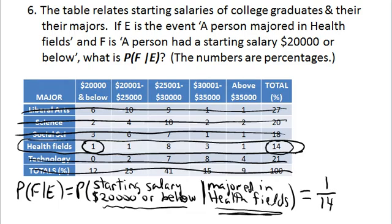So it would be 1/14. This particular problem asks us to write that back as a decimal to the nearest hundredth. You have to pay attention to the directions. Written as a decimal to the nearest hundredth, that comes out to be 0.07. So the probability that a person has a starting salary of $20,000 or below, given that that person majored in health fields, is about 7% — 0.07.